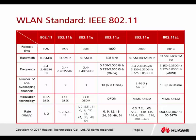This table shows all the different 802.11 versions. The release times are different for each. The bandwidth for 802.11 B and G uses the same bandwidth. 802.11 N and AC can support up to 325 Mbps. The number of non-overlapping channels in 802.11 B, G, and N is 3. For 802.11A, there are 13 non-overlapping channels, but in China there are only 5. This is also the same for 802.11 AC.